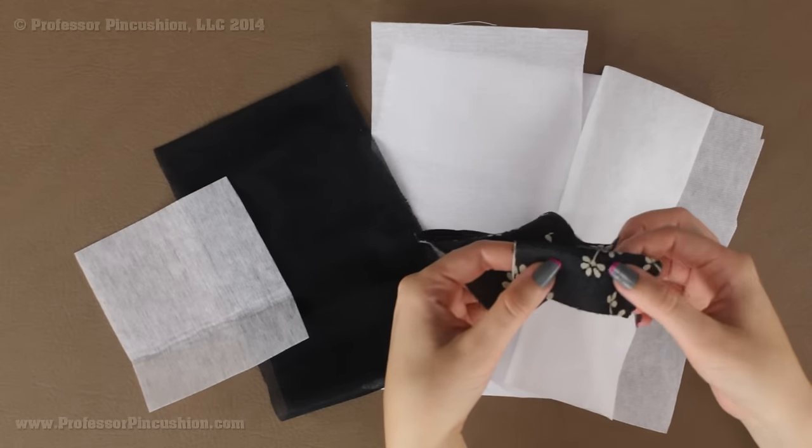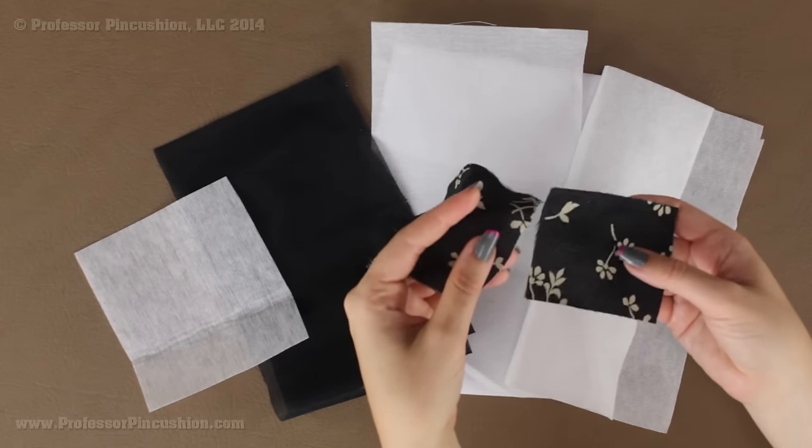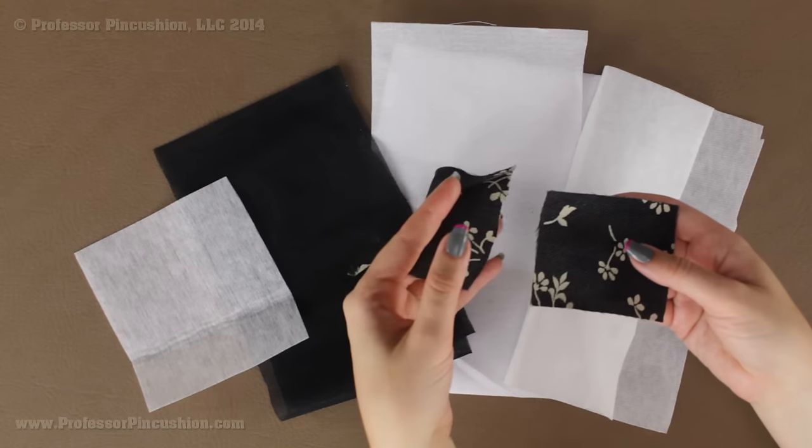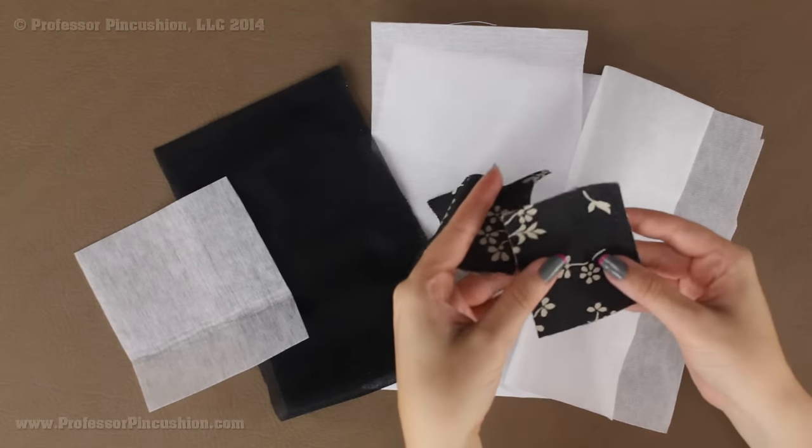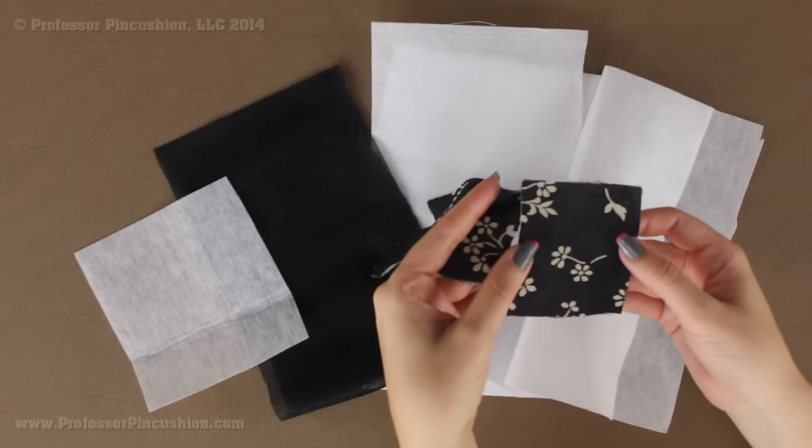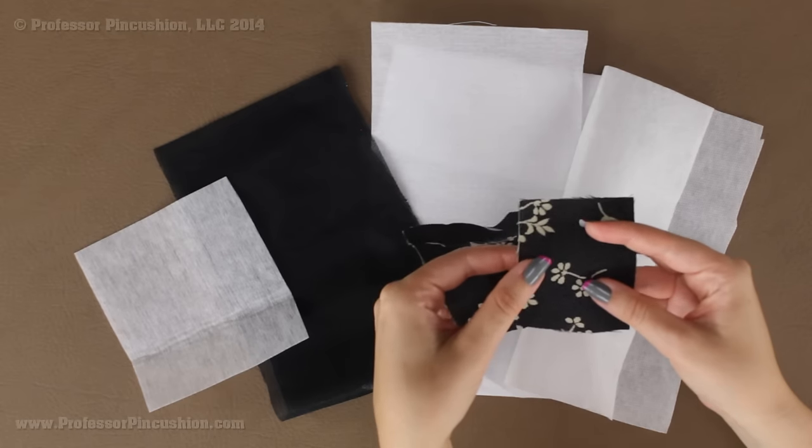So this would be ideal for waistbands, collars, cuffs and it's commonly used in garment sewing but you can use it in other projects as well. Now if you use it correctly, it's going to be on the wrong side of the garment between layers so you'll never see it and you'll never know what's being used. But it does provide a valuable asset to our projects.